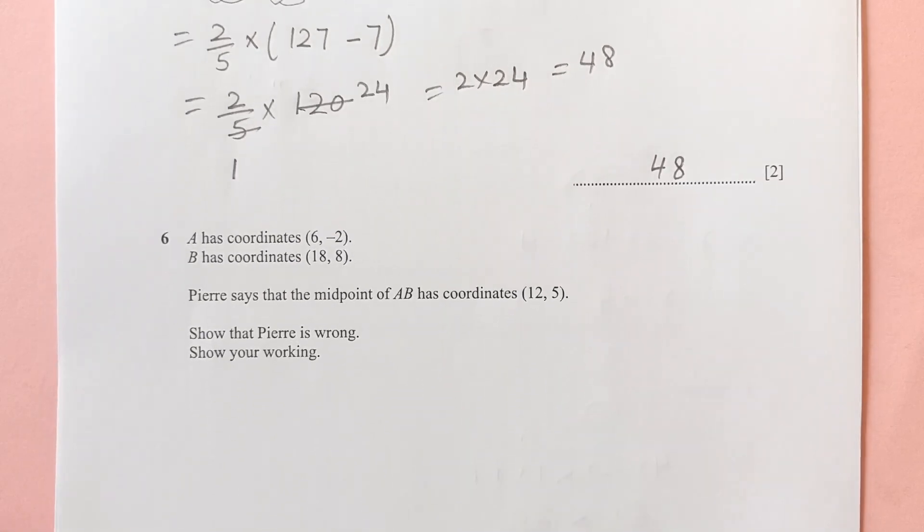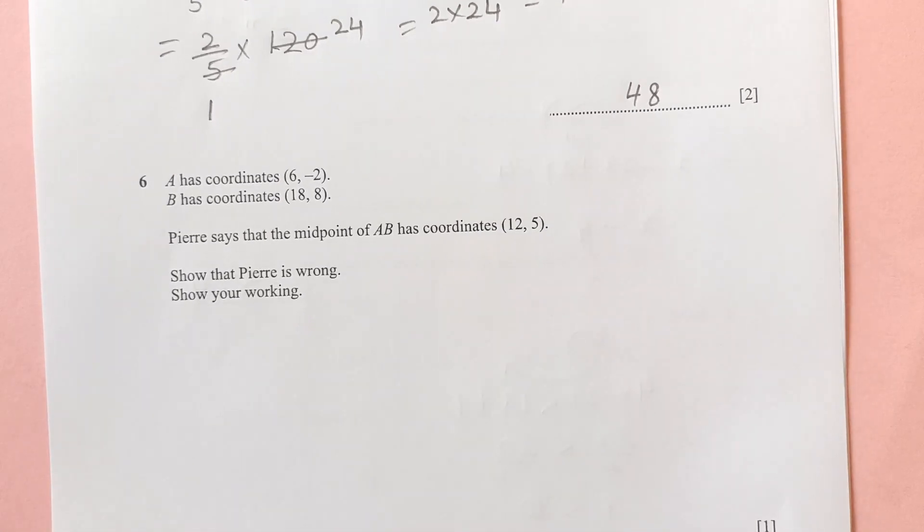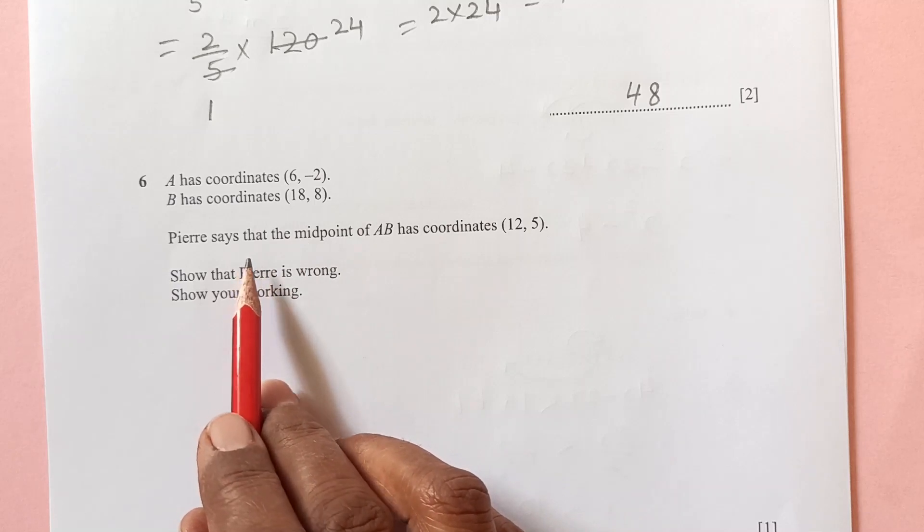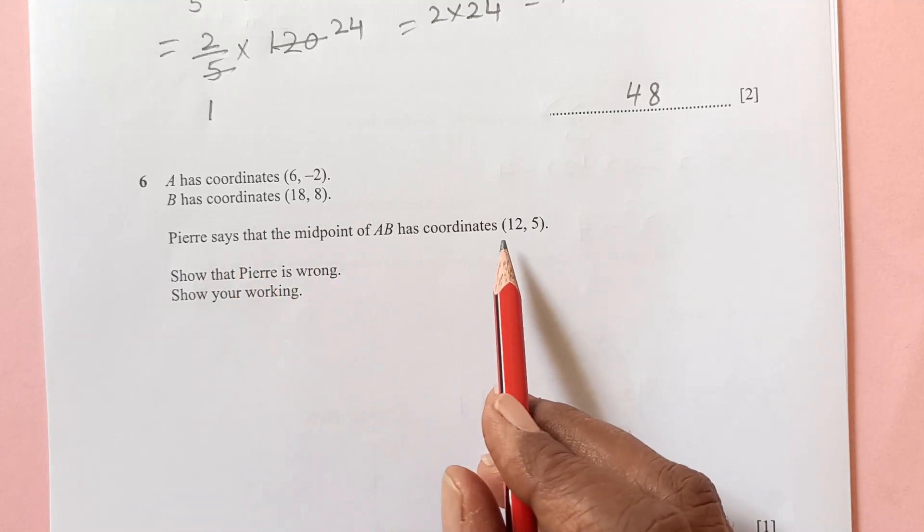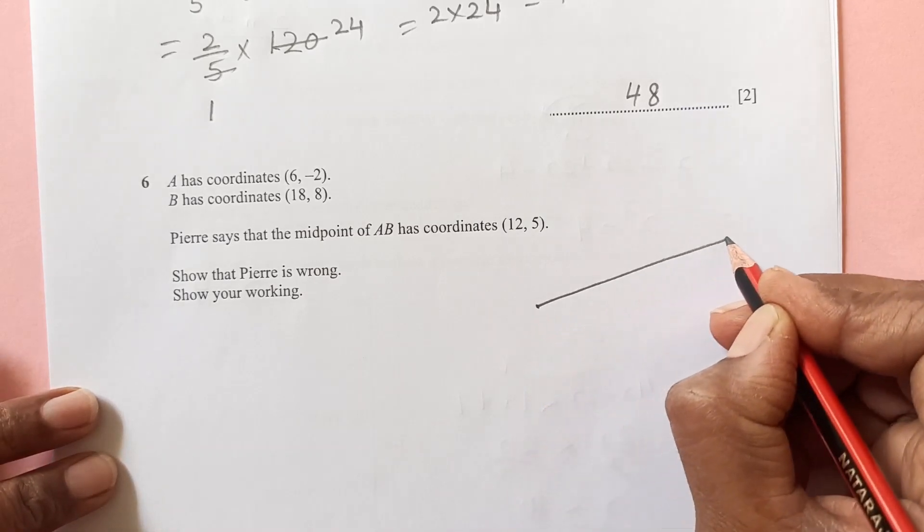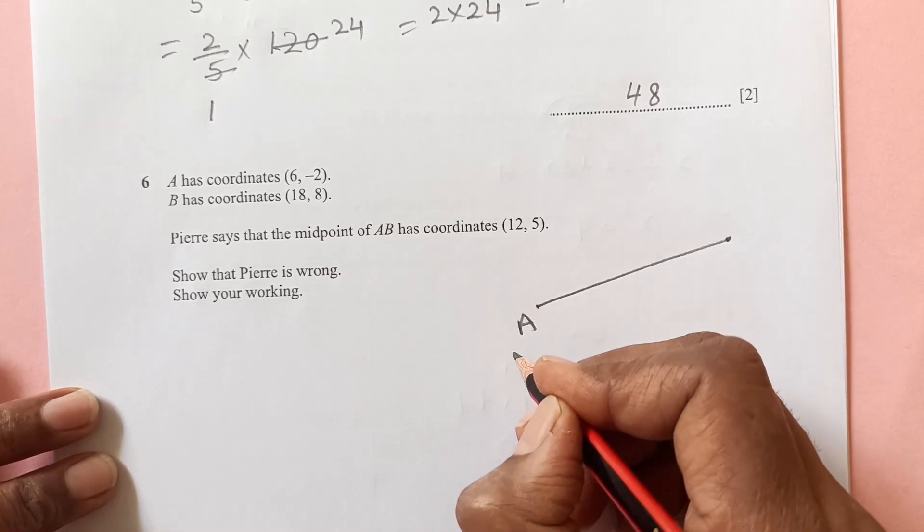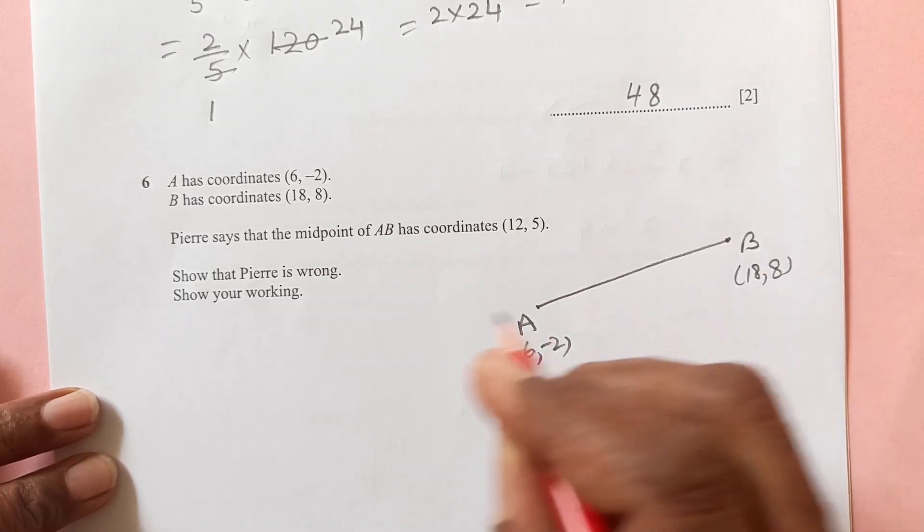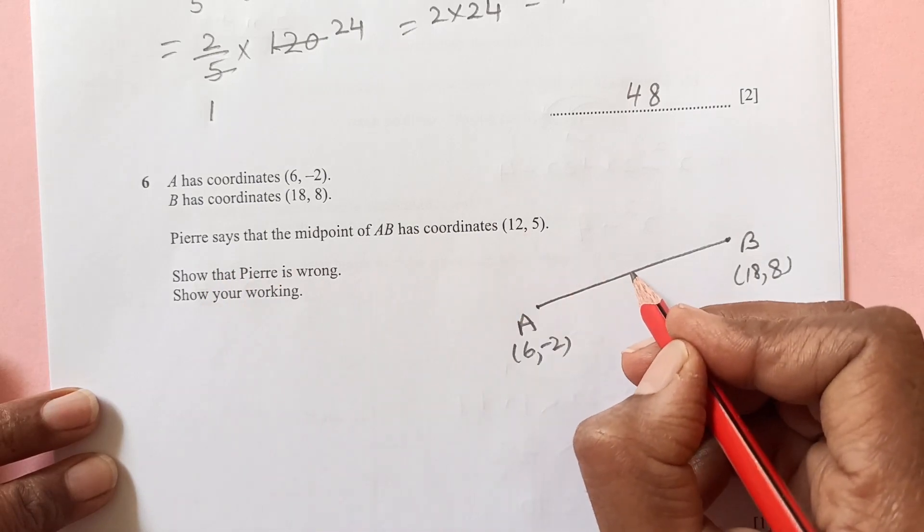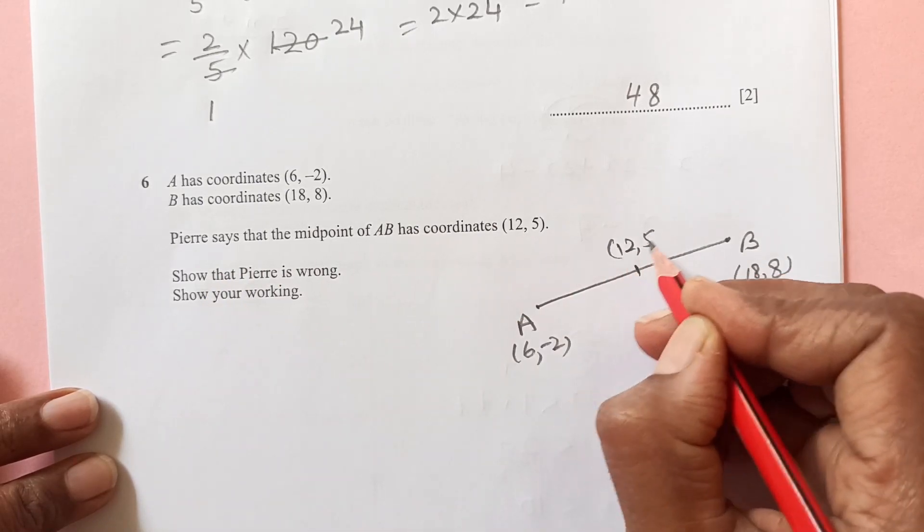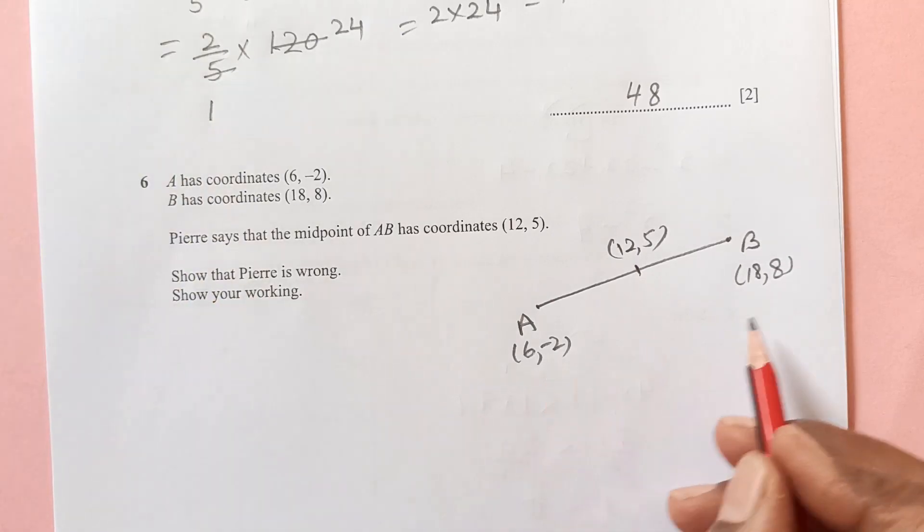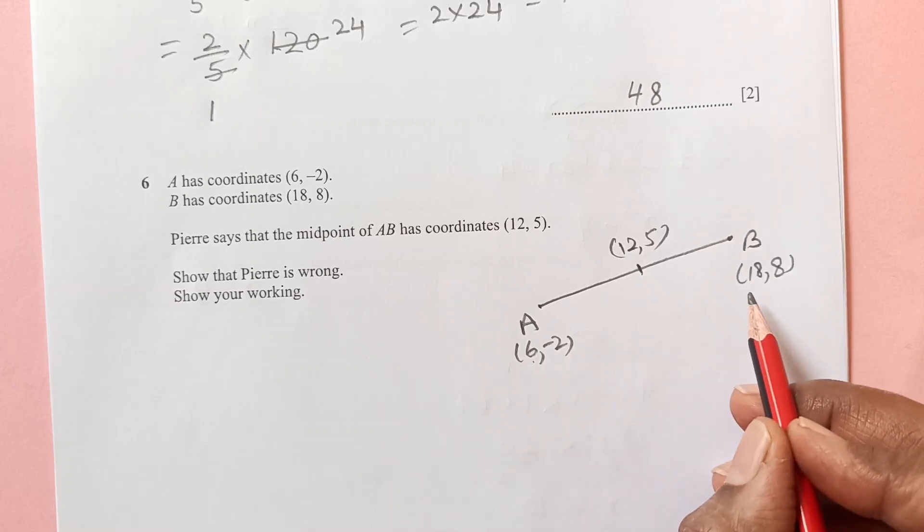Number 6. A has coordinates 6, -2. B has coordinates 18, 8. Pierre says that midpoint of AB is 12, 5. Let's say this is point A, 6, -2, and this is B, which is 18, 8. He said that midpoint is here. Show that Pierre is wrong. So let's see the midpoint. Midpoint is like the average, you add x1, so midpoint formula is x1 plus x2 over 2, y1 plus y2 over 2.